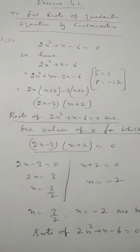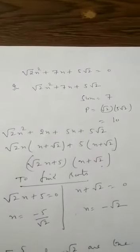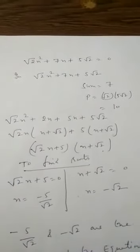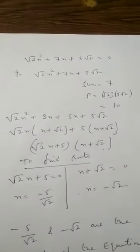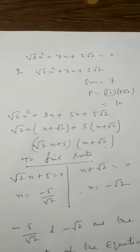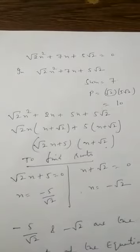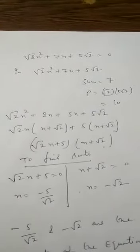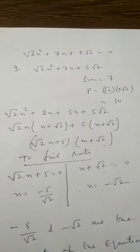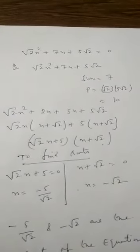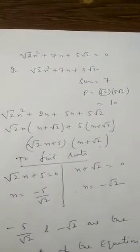Similarly, let's take one more question: how to find the roots of the equation root 2 x squared plus 7x plus 5 root 2 is equal to 0. In this equation, the sum of numbers should be 7 and the product should be root 2 into 5 root 2, that is 10. So the middle term will be split as 2x and 5x. From the first two terms, take root 2x common, leaving x plus root 2 inside. From the next two terms, take 5 common, leaving x plus root 2.